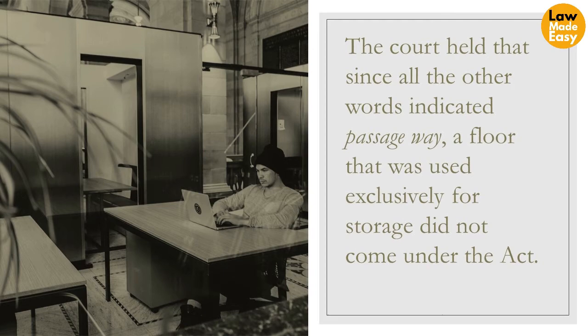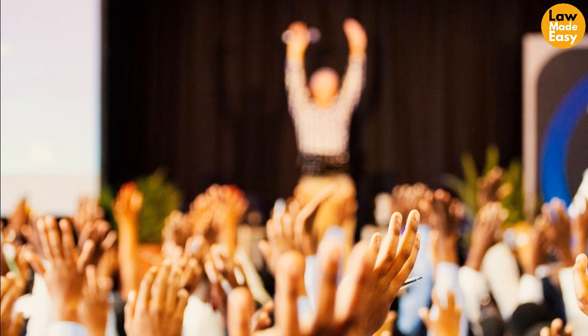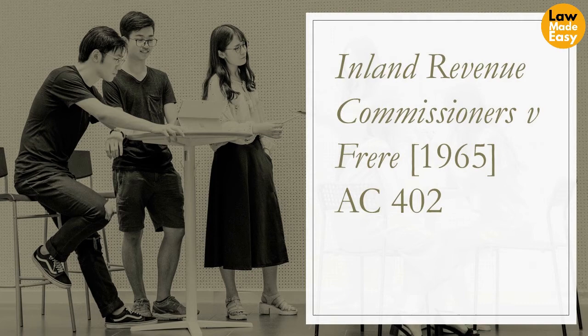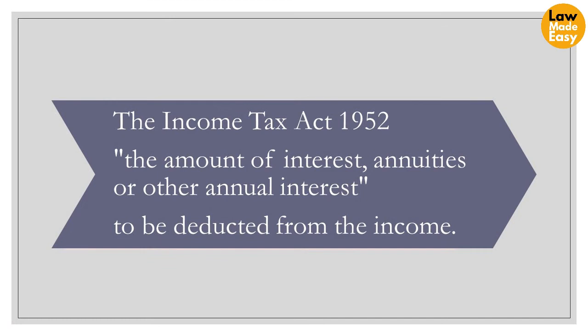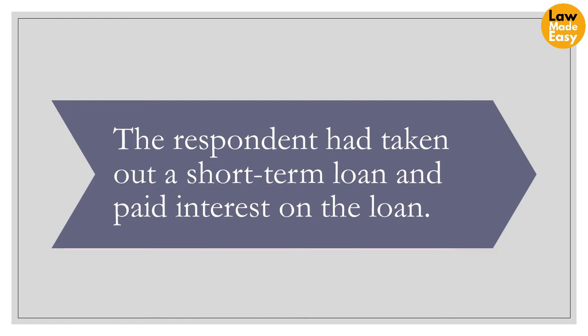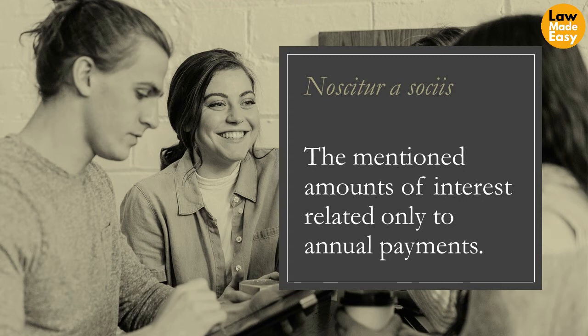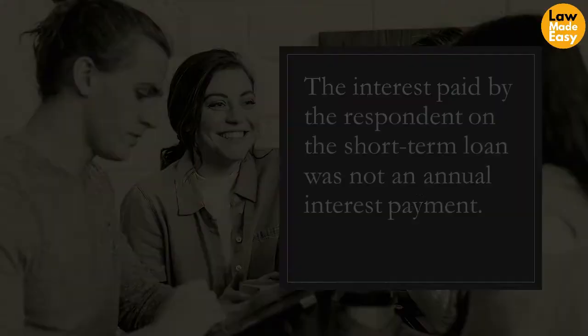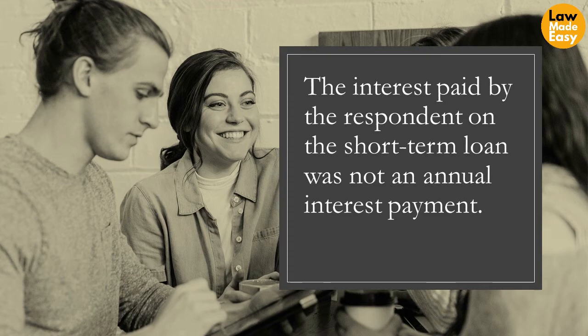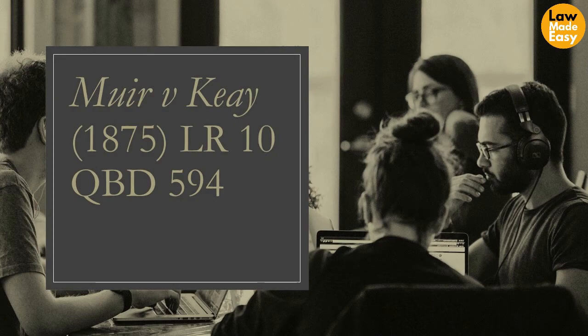Another example is Inland Revenue Commissioners v Frere. The Income Tax Act 1958 allowed the amount of 'interest, annuities or other annual interest' to be deducted from income. The respondent had taken out a short-term loan and paid interest on that loan; for tax assessment purposes he sought to deduct the interest payable on the short-term loan. As per the noscitur associiis rule, the mentioned amounts of interest related only to annual payments. Since the interest paid by the respondent on the short-term loan was not an annual interest payment, he could not deduct it from his income and was therefore liable to pay tax on it.